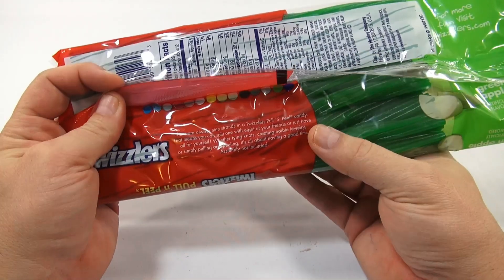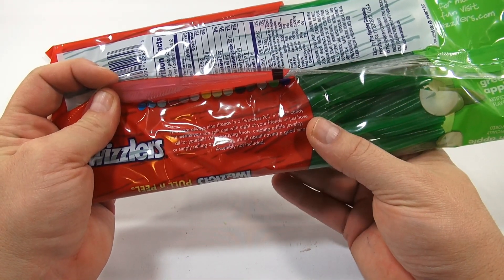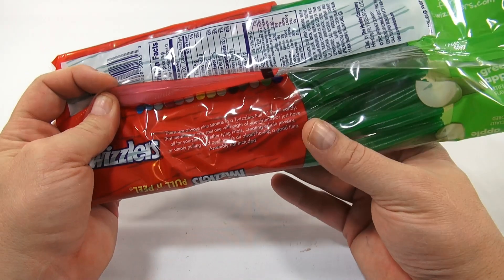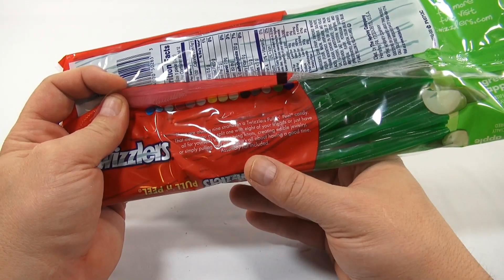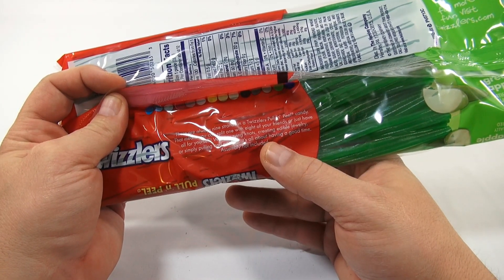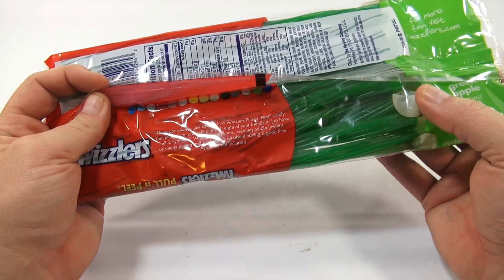There are always nine strands in a Twizzlers pull and peel candy. That means you can split one with eight of your friends or just have it all for yourself. Whether tying knots, creating edible jewelry, or simply pulling and peeling, it's all about having a good time. Assembly not included.